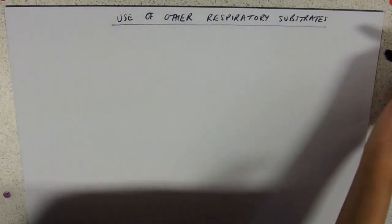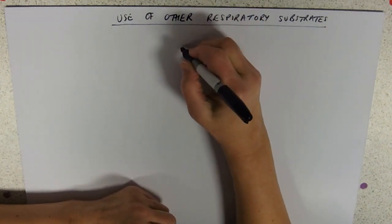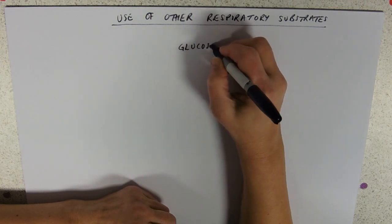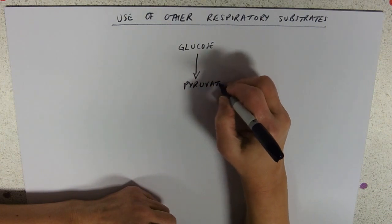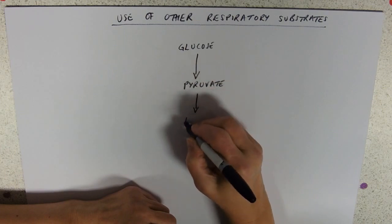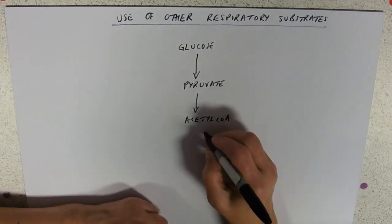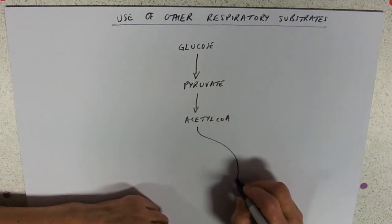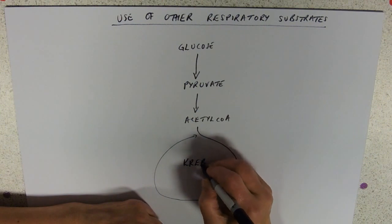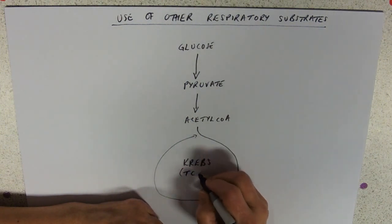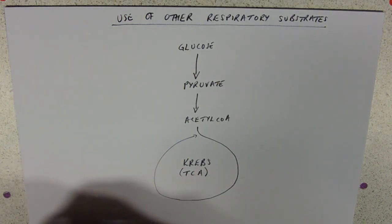This is about the use of other respiratory substrates. We've done respiration starting off with glucose, being made in glycolysis into pyruvate, going into the link reaction to make acetyl coenzyme A, then going around Krebs cycle, which is also called the tricarboxylic acid cycle — for reasons that probably make sense to a chemist.